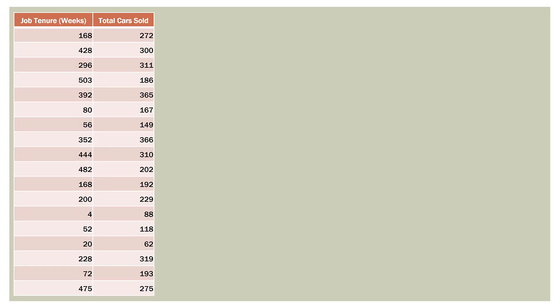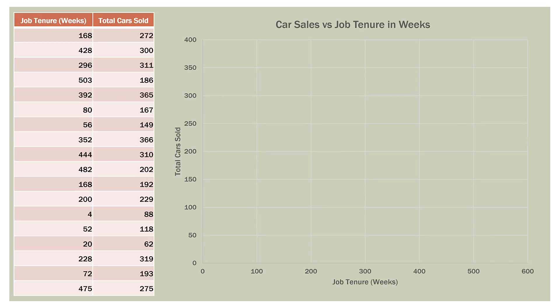Here is our data. In the first column we have our independent variable, which is job tenure — how long they've been on the job in weeks. The first person has been on the job for 168 weeks, and the second person has been on the job for 428 weeks, during which time they sold 300 cars. When we make a scatterplot of this data, we can tell it is not a linear model — it seems to go up and then takes a turn and kind of goes down.